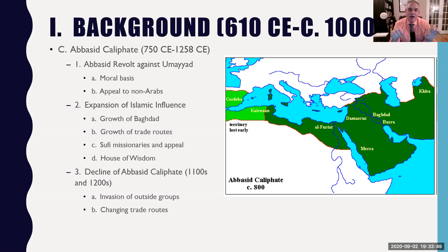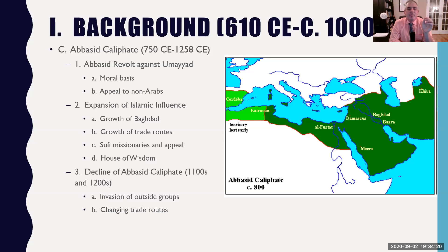Muslim merchants, along with missionaries, travel along trade routes such as the Silk Road and Indian Ocean Trade Networks, taking Islam with them. You want to think of the spread of Islam throughout Afro-Eurasia in two steps: in the 600s it was military spread, and then as you get into the 800s, it's done by merchants and mercantile activity.